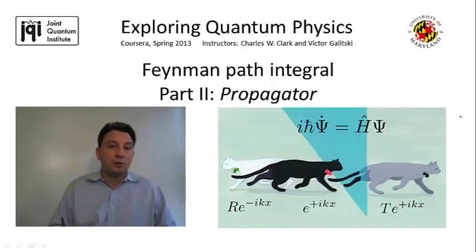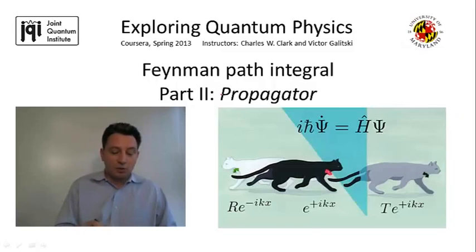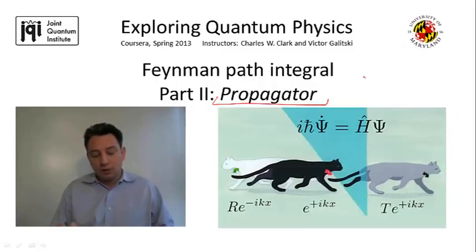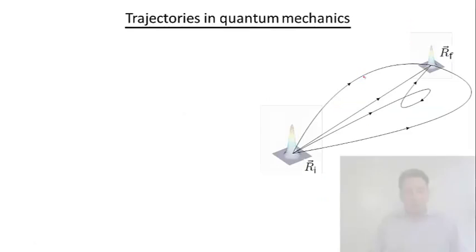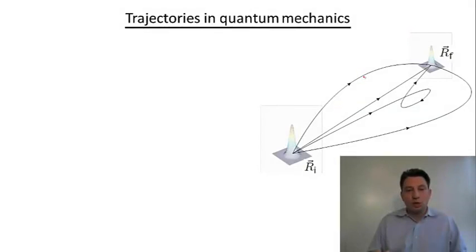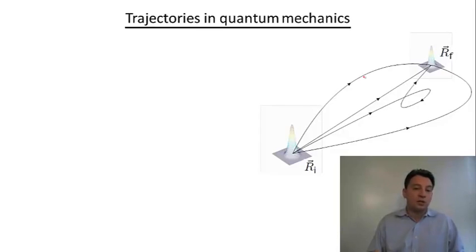The object we're going to discuss in this particular segment is the so-called propagator, which actually plays an important role in various aspects of quantum theory. But at this level, we can view it simply as an attempt to make quantum mechanics as close as possible to the concepts that we understand intuitively in classical physics.